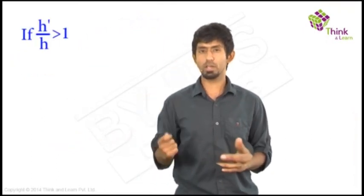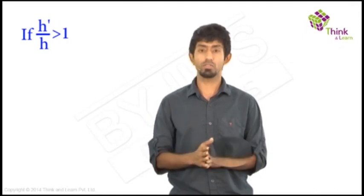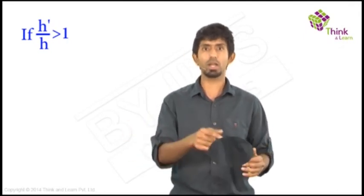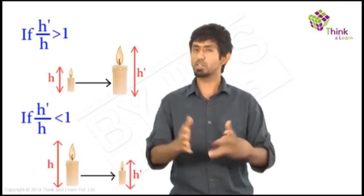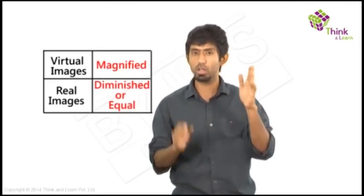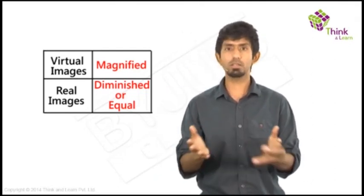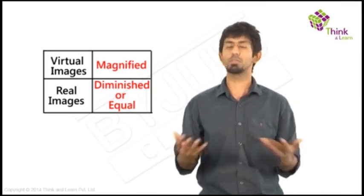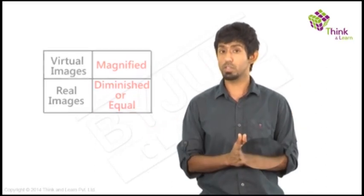So what do we know now? Whenever H dash by H is greater than 1, what do we know? We've achieved a magnification in the true sense. We're actually going to see the object being bigger than what it actually is. And if it's less than 1, we see it being smaller than what it actually is. Now there are some patterns you can begin to observe. Virtual images are usually magnified and real images are usually either diminished, or in other words have magnification less than 1, or have equal size. Now why is that true? I'm not going to go into the patterning behind this. You can go ahead and play with it. You have to leave something open out to you. But you're free to go ahead and find out the patterns between magnification and the real and virtualness of an image.